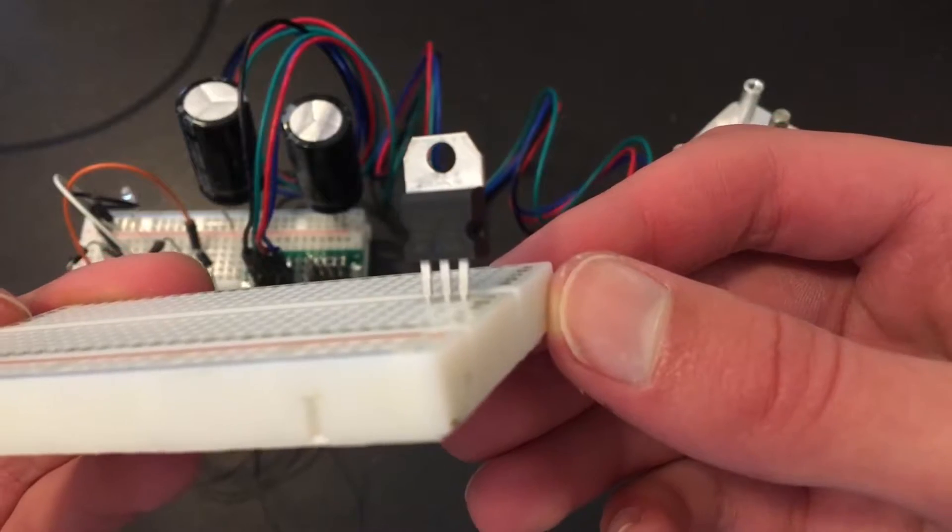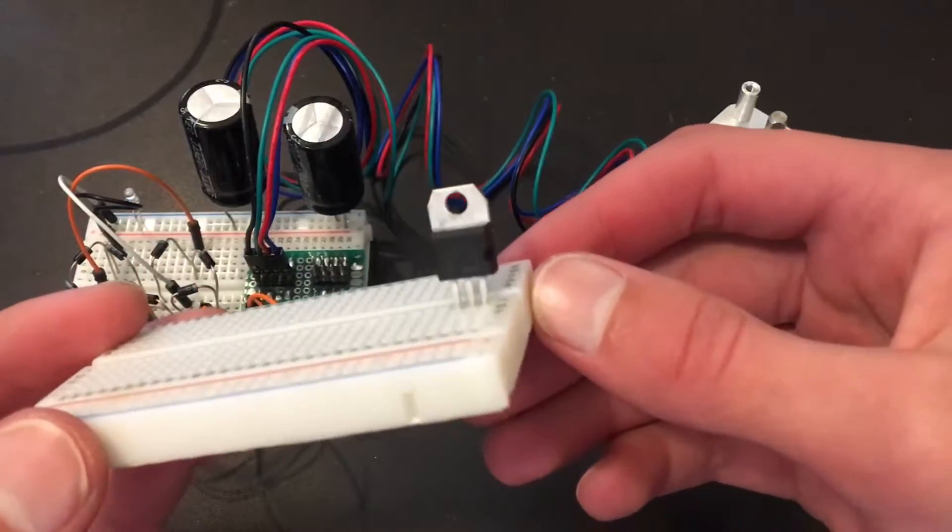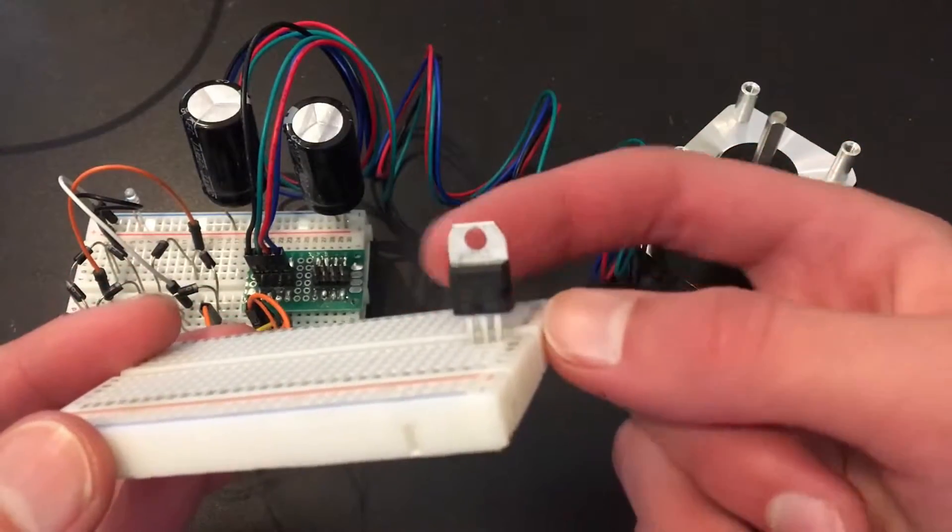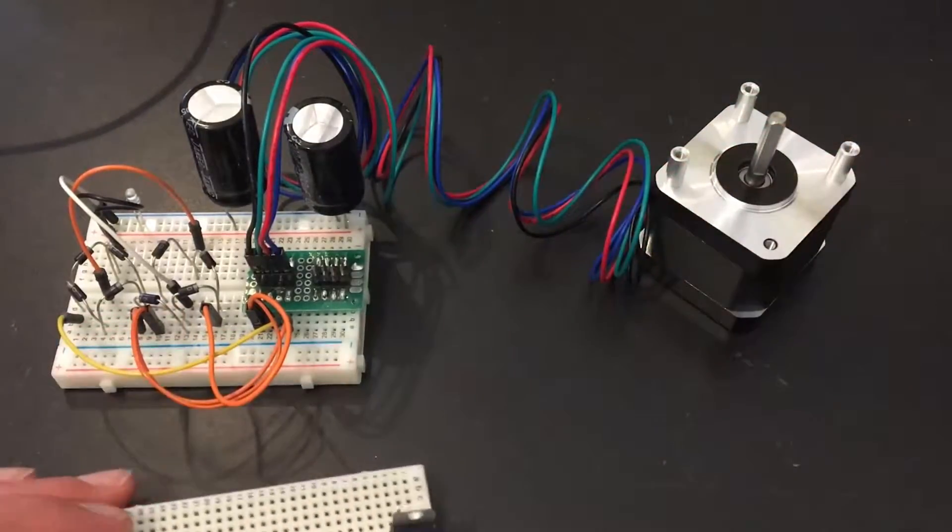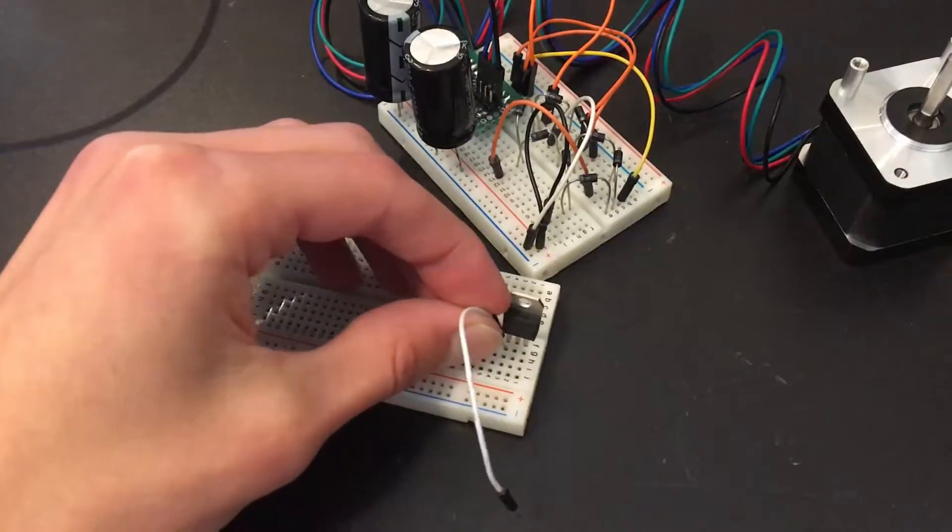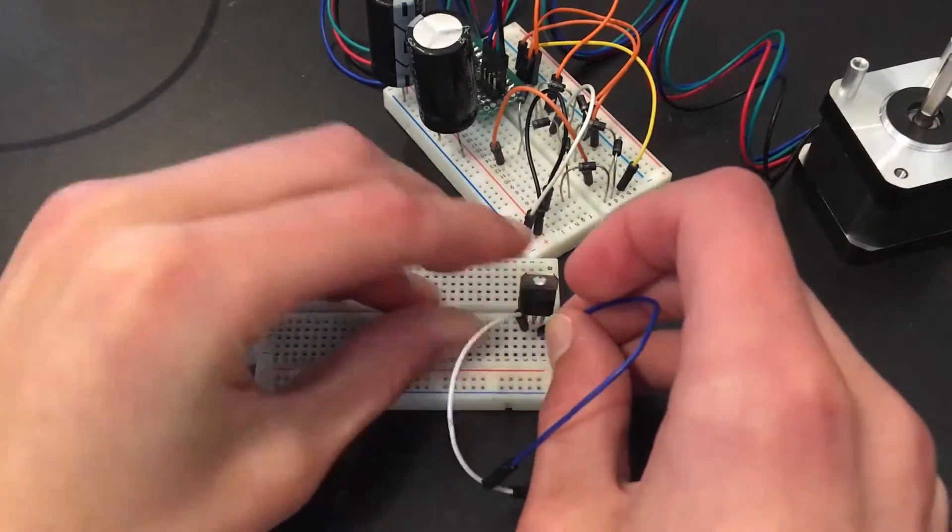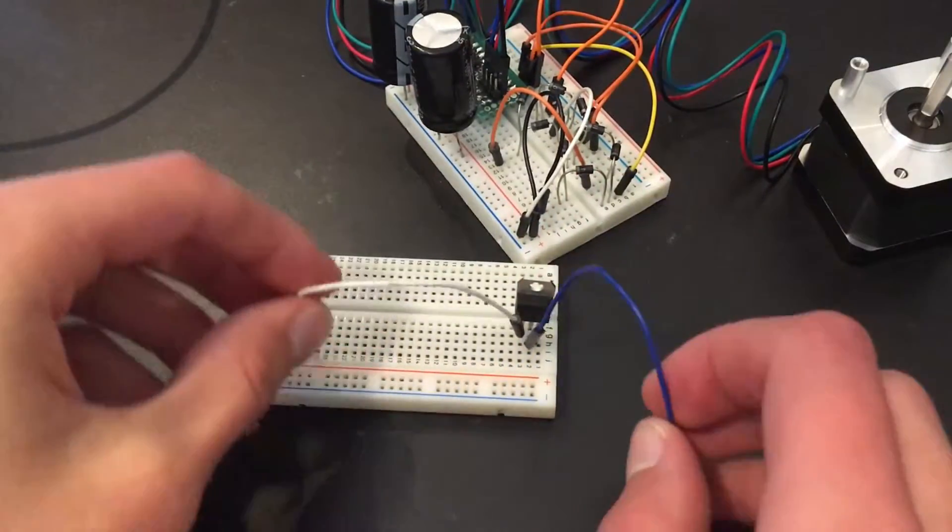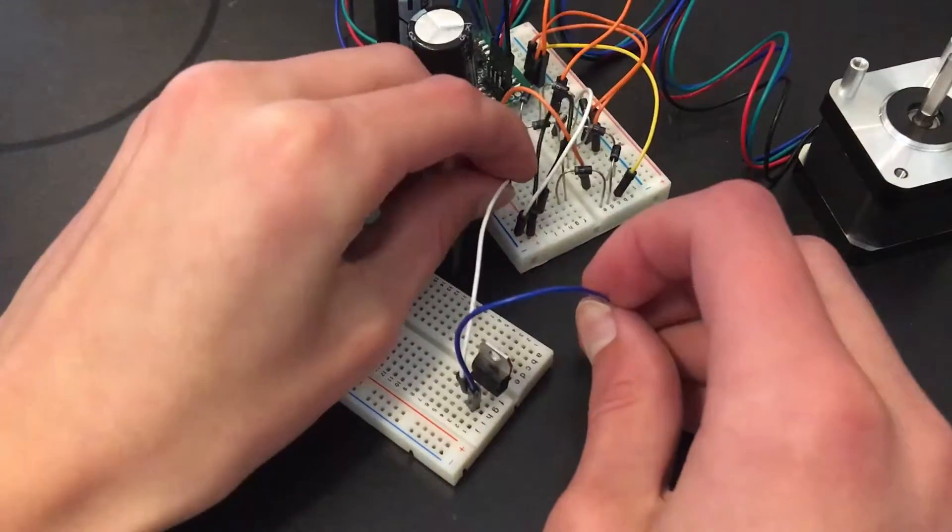Input and ground for this linear regulator will go to the power rails, positive and negative, of the other breadboard. And on the output, when we turn the motor, we should have a stable 5 volts.